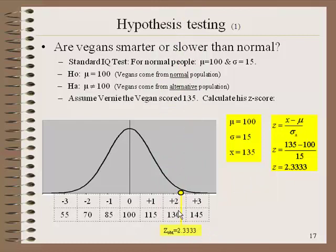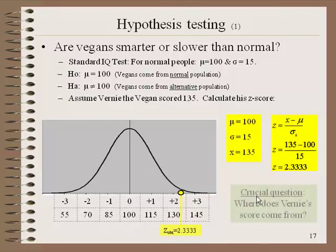You can see how the score of 135 lines up on the raw score axis. We've just converted it to a Z-score so we can place it on this normal curve and decide what percent falls above or below it. The crucial question at this point is: where does this score come from? Does it come from the null distribution or from the alternative distribution?